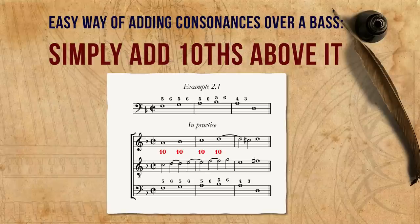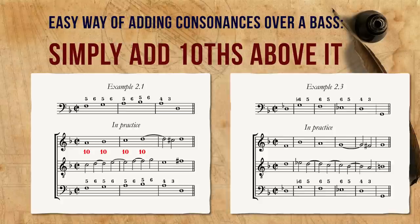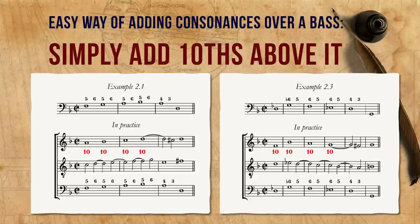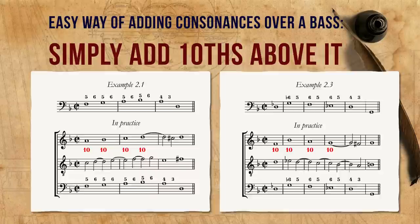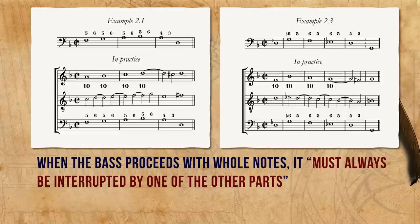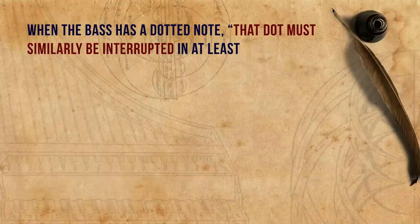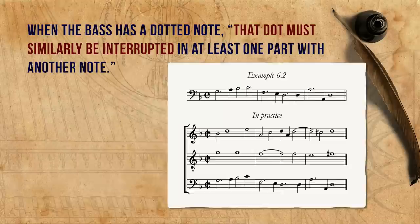Penna demonstrates an easy way, mentioned often by theoreticians, of adding consonances over a bass: simply add a tenth above it. For example, when ascending, you put the tenth in the top voice and use fifths and sixths in the inner part. Or, very similarly, when descending. He also explains that when the bass proceeds with whole notes, it must always be interrupted by one of the other parts with half notes, as he did in these two examples. Another useful tip is that when the bass has a dotted note, that dot must similarly be interrupted in at least one part with another note. He demonstrates it with this beautiful example — you might surprisingly realize that you have already heard it elsewhere.